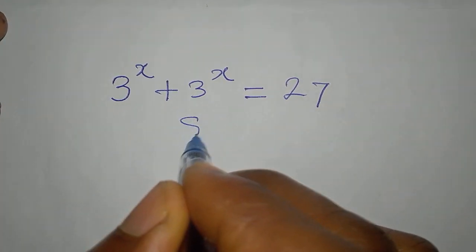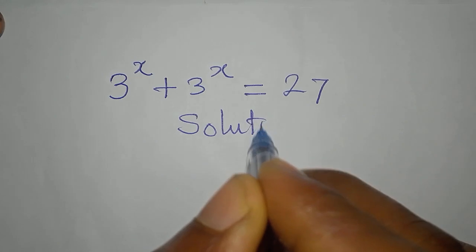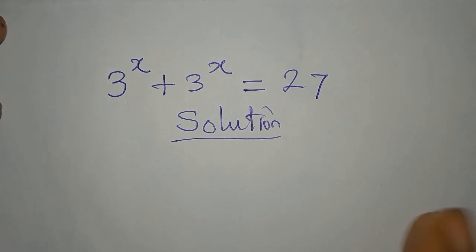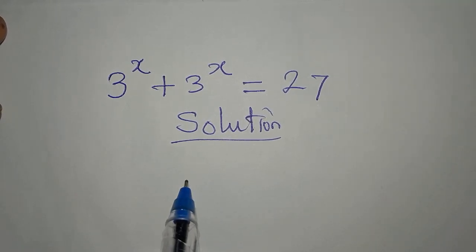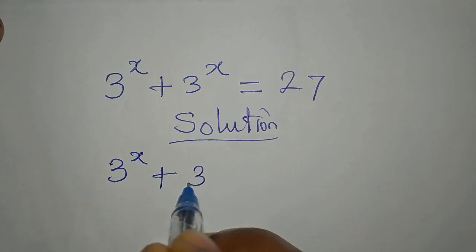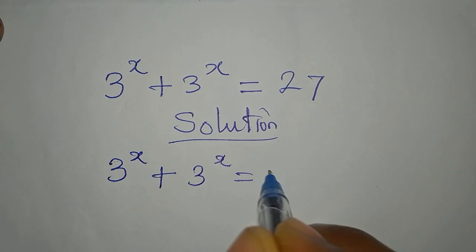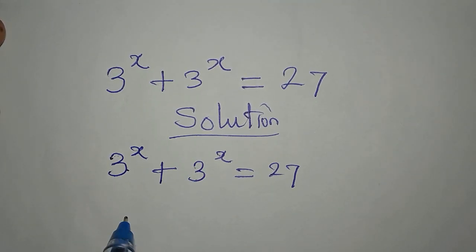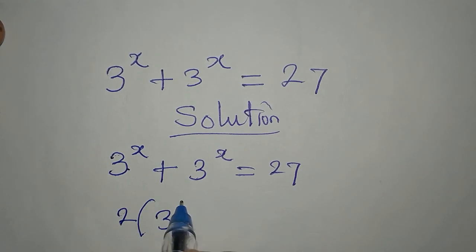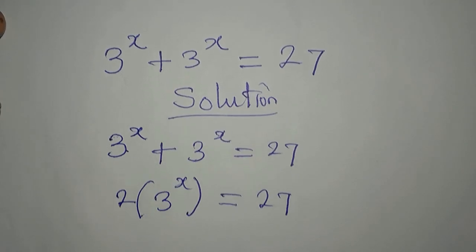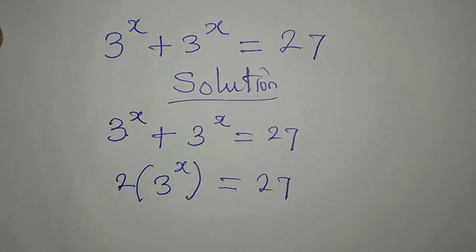Hello everyone, let's provide a solution to this. If you're new to this channel, you're welcome to Few Cool Maths, where we provide detailed solutions to maths problems. We have this before us: 3^x + 3^x equals 27. We can put these two together so that we have 2 times 3 to the power of x, and this is equal to 27.